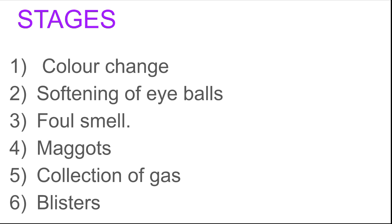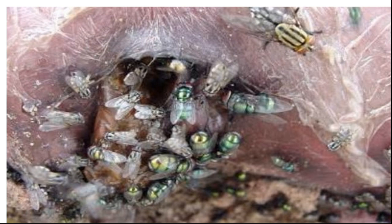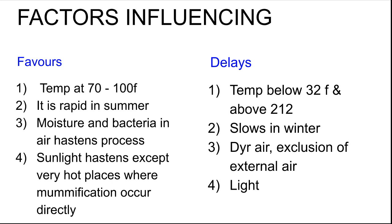There are six stages of putrefaction: first, color change; second, softening of eyeballs; third, foul smell; fourth, maggots — which are larvae of large house flies; fifth, collection of gas blisters; and sixth is further decomposition. Factors favoring putrefaction include a temperature of 72°F, moisture, bacteria in the air, and sunlight — all hasten the process. In very hot places, mummification can occur directly. Factors delaying putrefaction include temperatures below 32°F or above 212°F, winter conditions, dry air, and exclusion of external air and light.